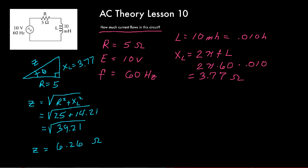Now we can calculate the current. The answer to the question was the current. That's what the question is: how much current flows in the circuit? I equals E over R when we were doing DC, but now I equals E over Z in AC theory. So we're going to take 10 volts, divide that by 6.26 ohms. 10 divided by 6.26 gives you 1.597 amps. We could probably round that off to 1.6 amps.